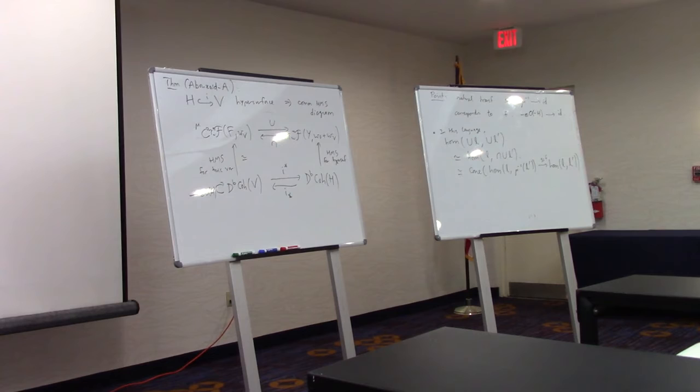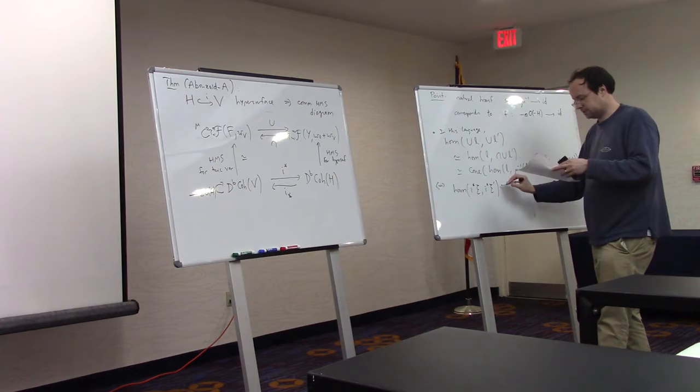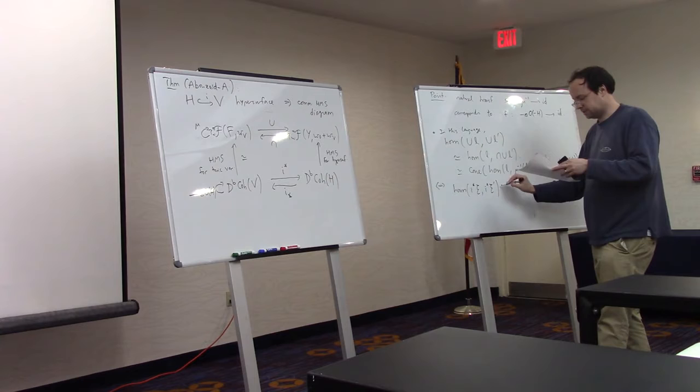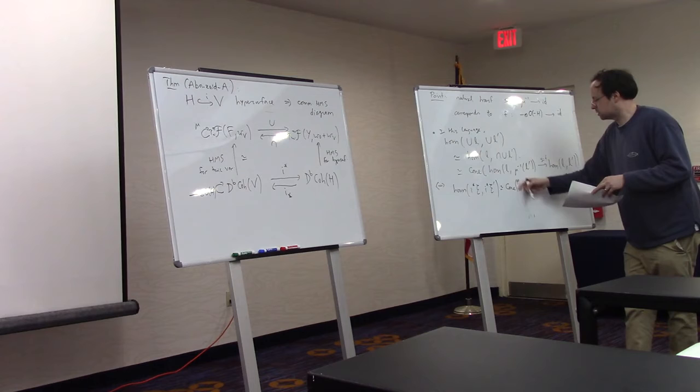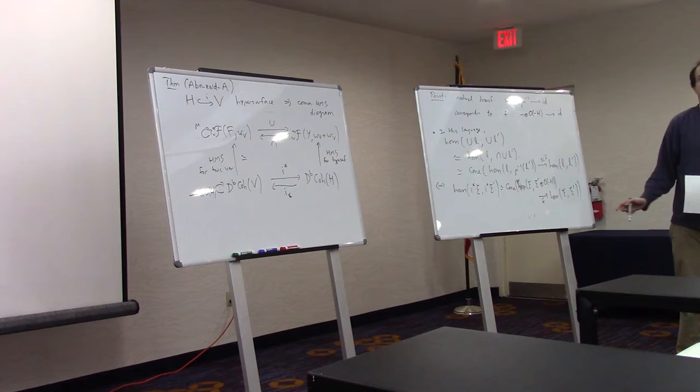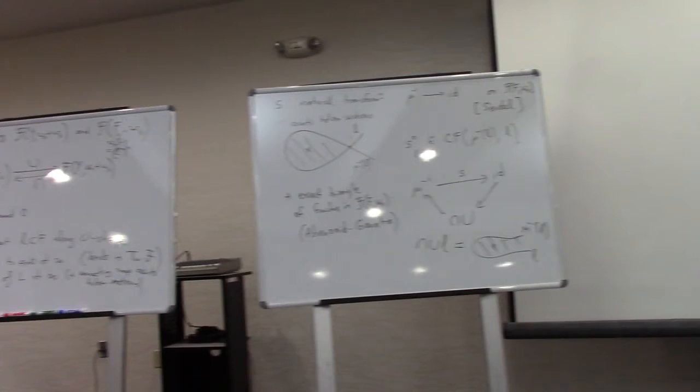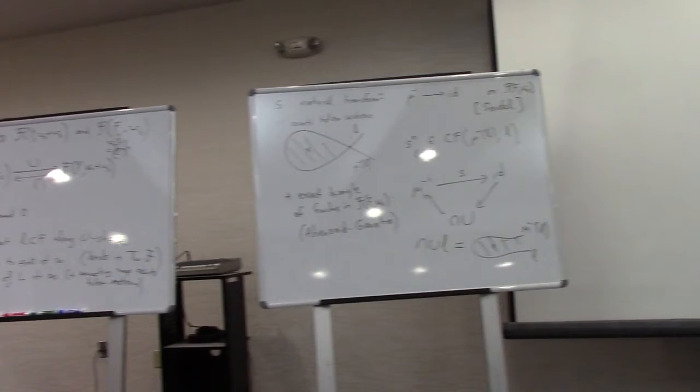So now you understand what happened in algebraic geometry. Maybe I should write it here. This is equivalent to in algebraic geometry, calculating homs between two restrictions of sheaves on the ambient space. So this is the cone of E, E prime tensor O of minus H to E, E prime, just by basically resolving the restriction of E prime by E prime tensor O of minus H going to E prime.